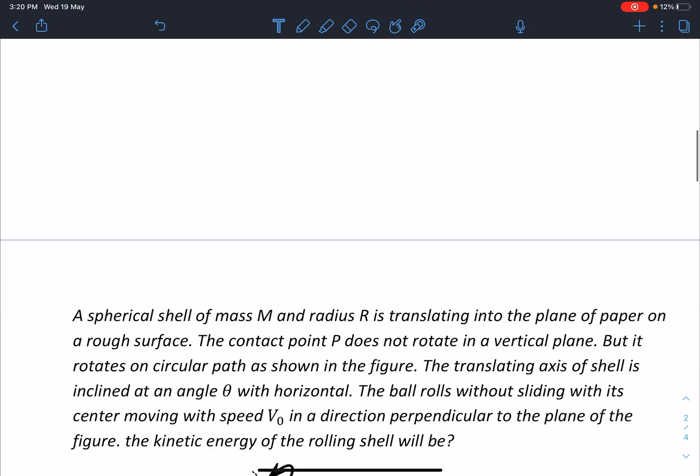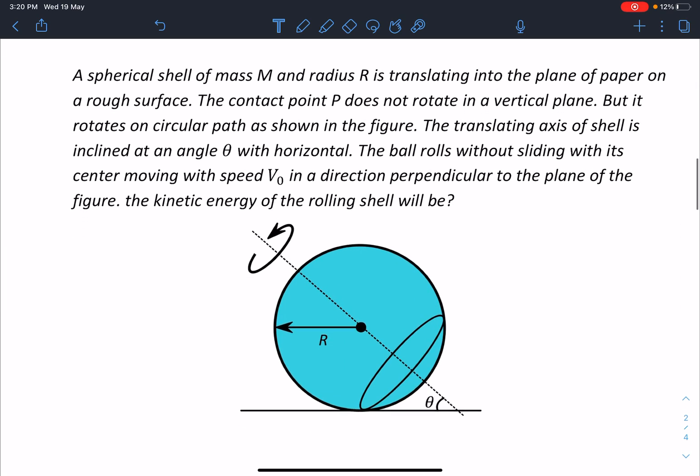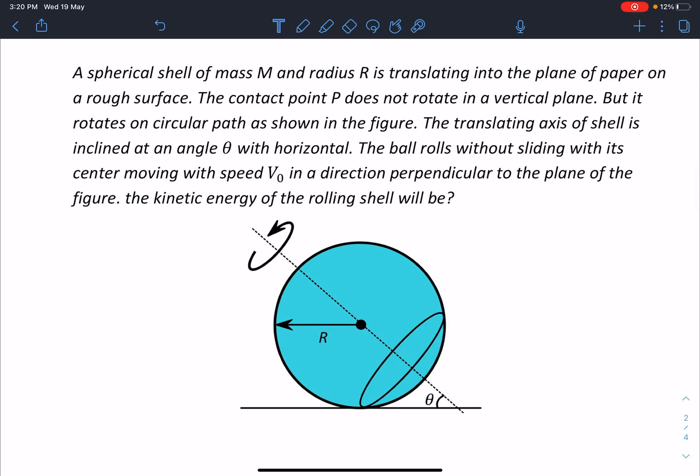Here is the problem statement: A spherical shell of mass M and radius R is translating into the plane of paper on a rough surface. The contact point P does not rotate in a vertical plane, but it rotates on a circular path as shown in the figure.